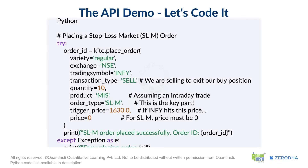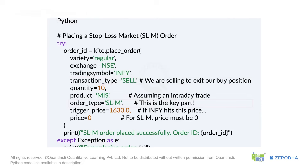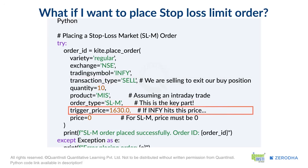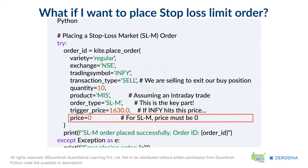Let's break that down. Transaction type is sell, because we're exiting a long position. Order type is SLM, and notice the two key parameters: trigger price is set to our stop loss level of Rs. 1630. And crucially, the price is set to zero — that's how the API knows it's a market order.